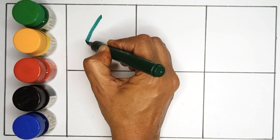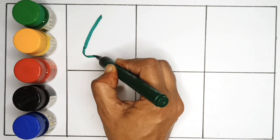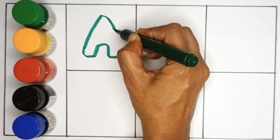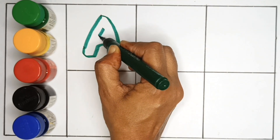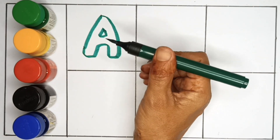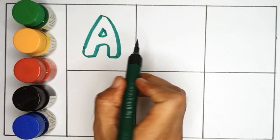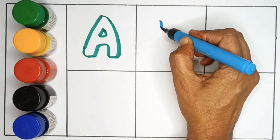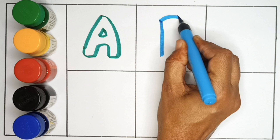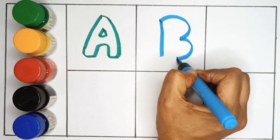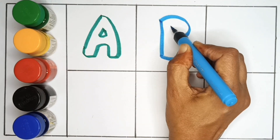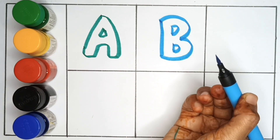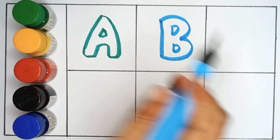A. A for apple, green color. B. B for ball, blue color, light blue color.